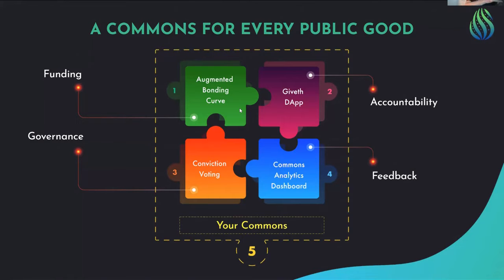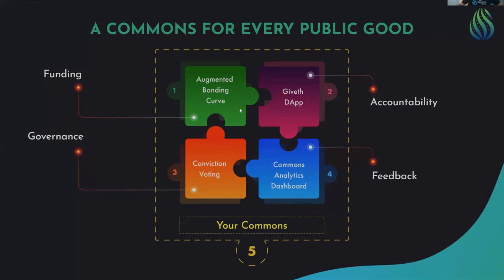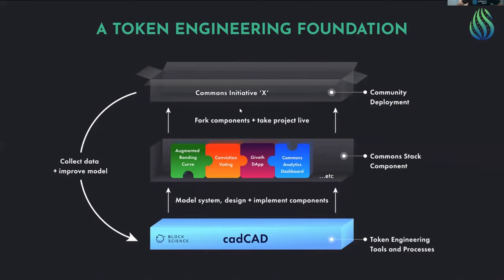I'm going to focus most of all on the first element — how such an organization can fund itself. But we have other components as well, such as how an organization can do proper governance, be accountable, have feedback, and constantly improve. If you might know Giveth, it's one of the co-founders of the Commons Stack and it's going to be the accountability layer. We want to create a package that any organization can take, which can be the start of your own Commons for any public good. At the basis of everything, we have CatCAD.